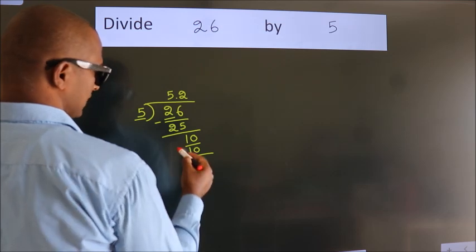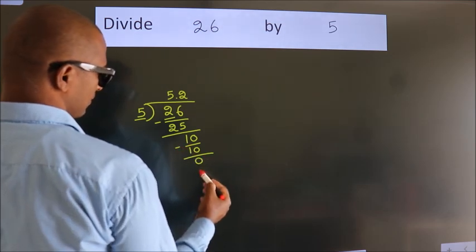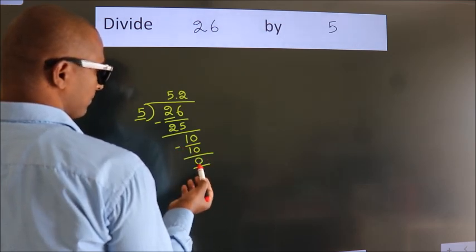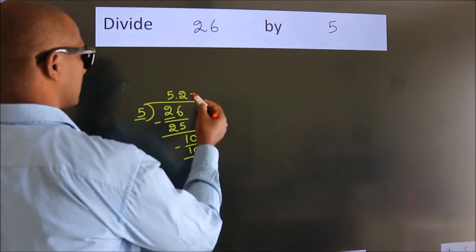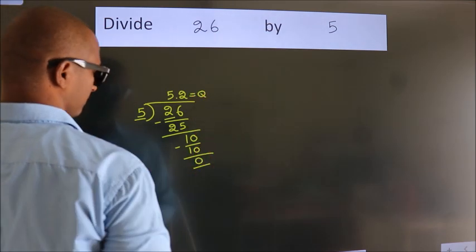Now we subtract. We get 0. We got remainder 0, so this is our quotient: 5.2.